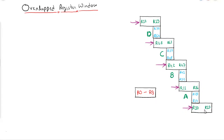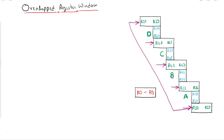Please observe carefully — here it is R10 to R15, and here also it is R10 to R15, so both register sets are the same. It is like a circular arrangement. If process A wants to share data with process B, process A will store that data into R26 to R31, and it will be used by process B. Similarly, if process B wants to share data with process C, it will store that data into R42 to R47, and process C can read that data from R42 to R47.